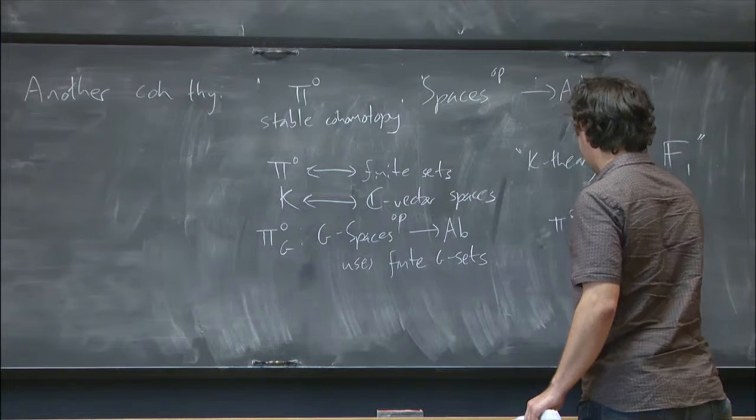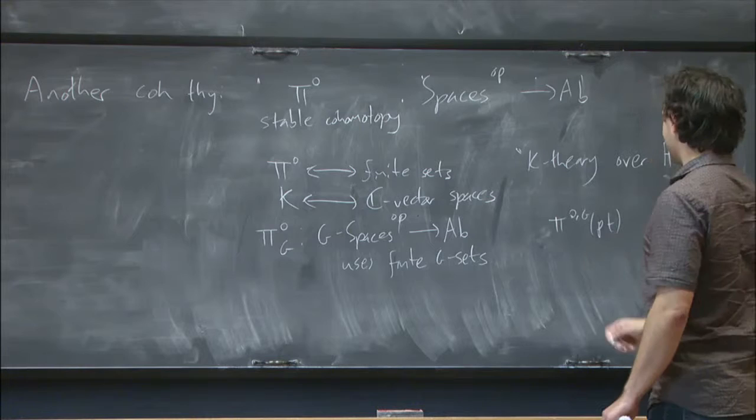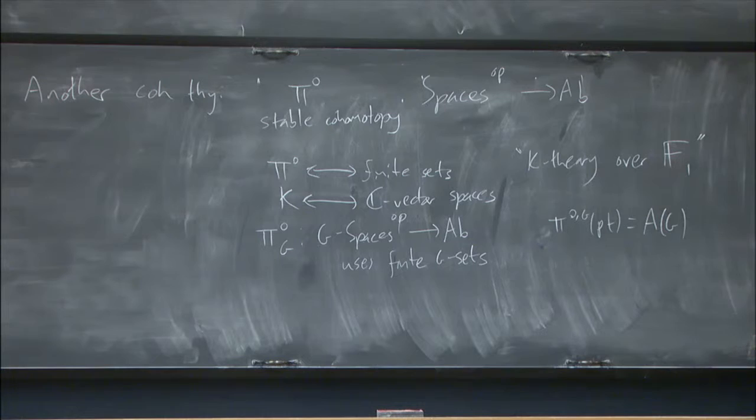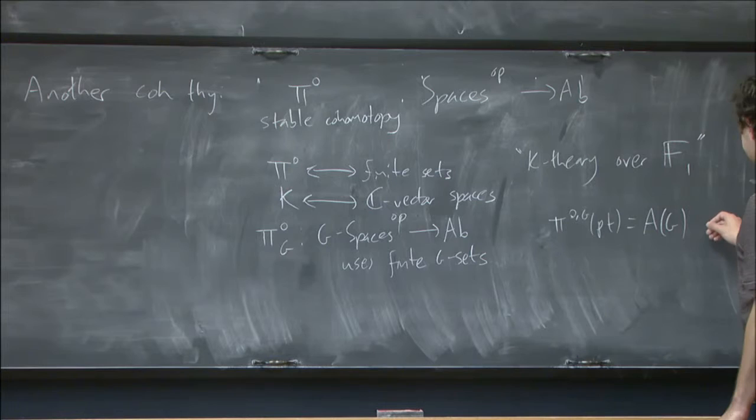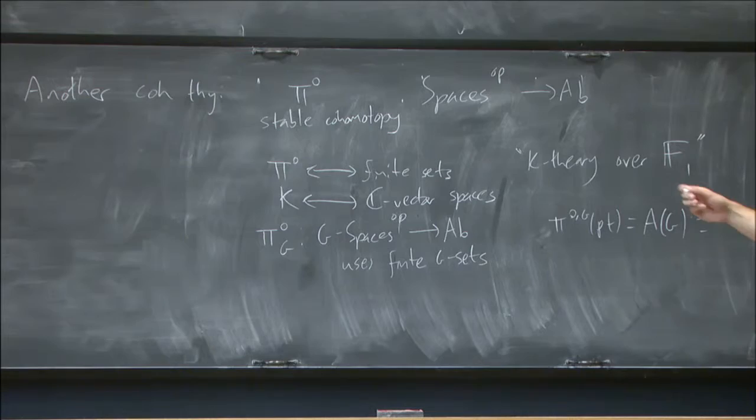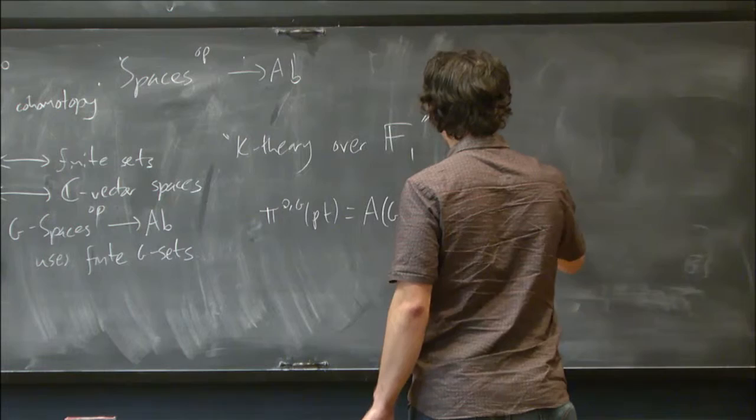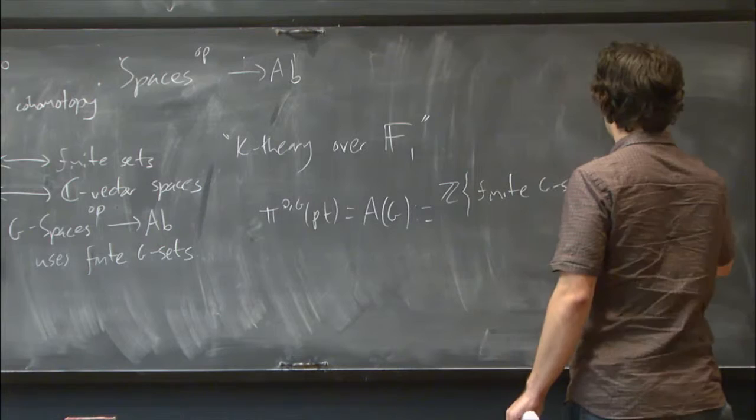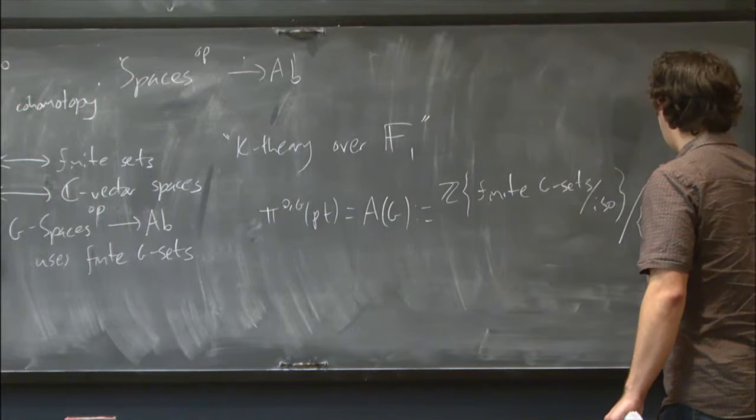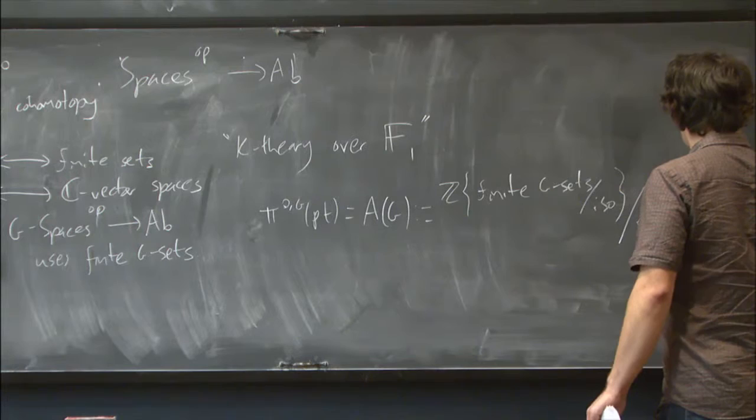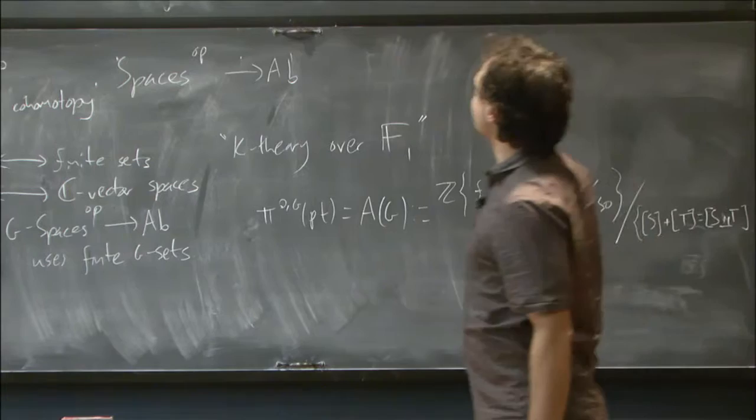All right. So I told you that you can't imitate the definition of K-theory, but one thing that is true is that, I guess I'll use the G superscript here, because that's what I was doing for K-theory. Its value on a point is this ring A of G, which is called the Burnside ring of G, which is defined to be something very similar to the representation ring, but with finite sets instead of vector spaces. It's the free abelian group on finite G-sets up to isomorphism, with the constraint that the sum is given by disjoint union.